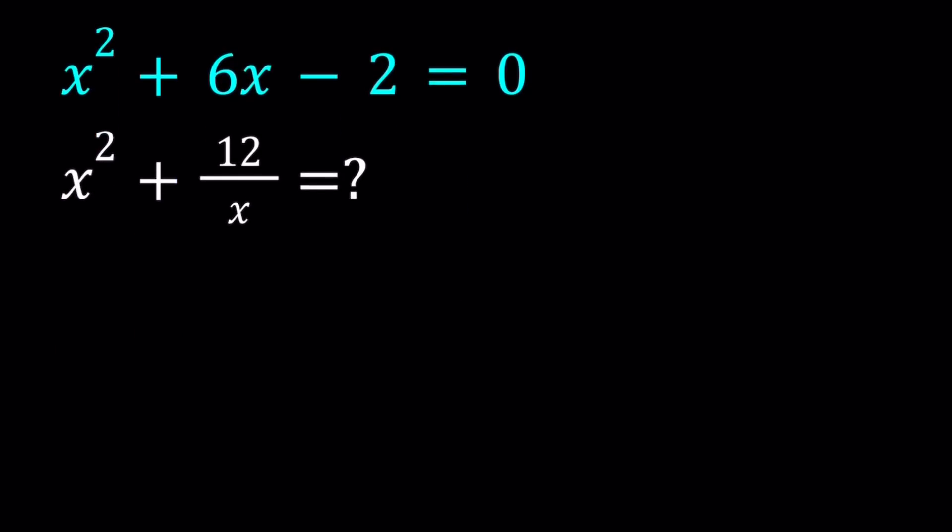In this video, we're going to be dealing with a polynomial expression. We have x squared plus 6x minus 2 equals 0, and we're going to evaluate x squared plus 12 over x. I'll be presenting three methods, and let's start with the first one.